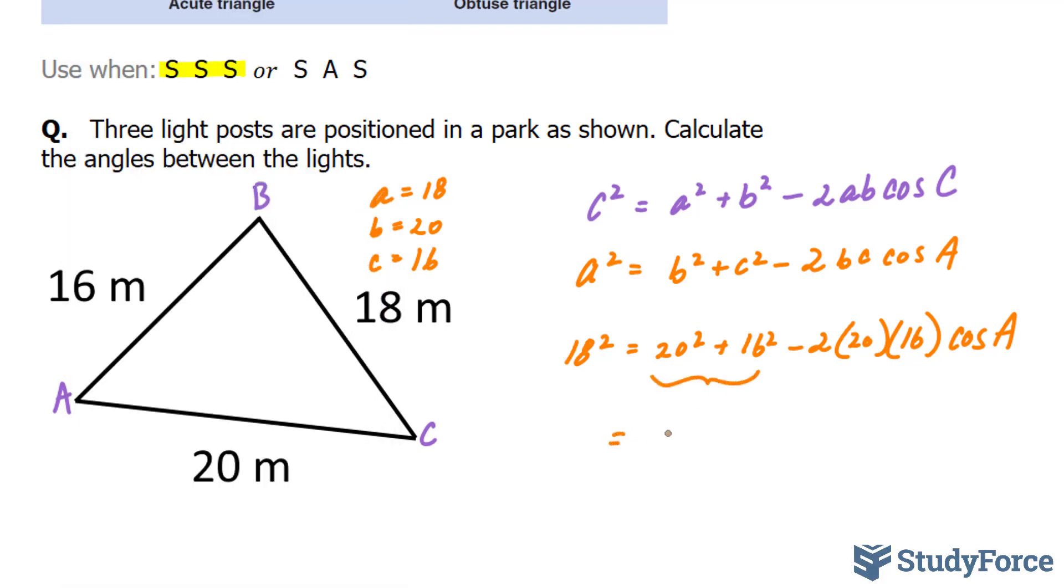And you get the answer 656. So this right here represents 656. Next, you will evaluate these three numbers. Negative 2 times 20 times 16.